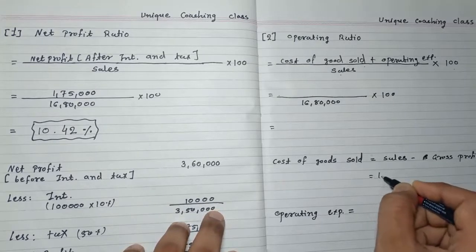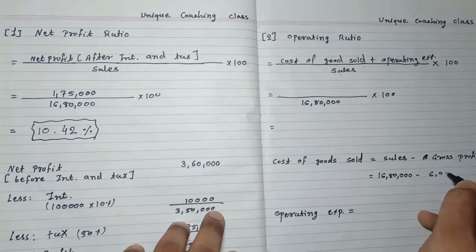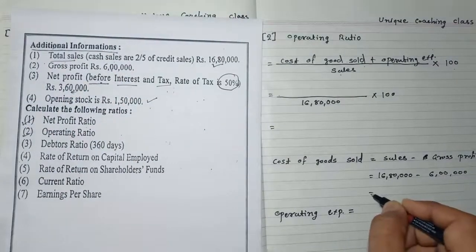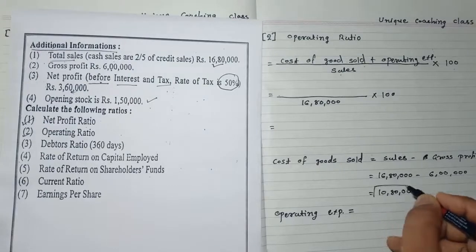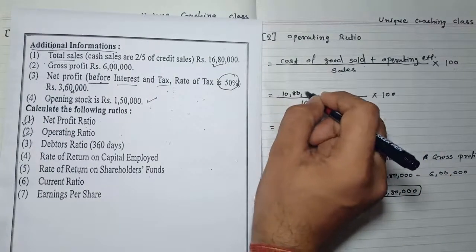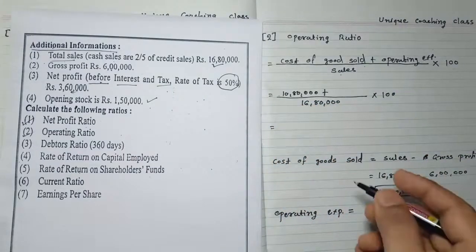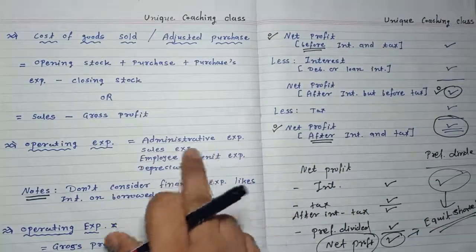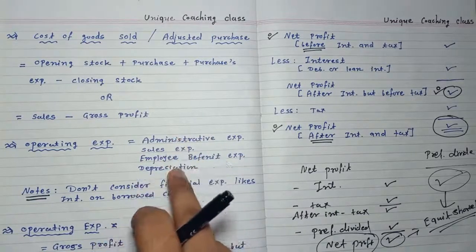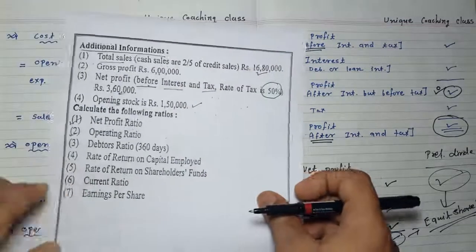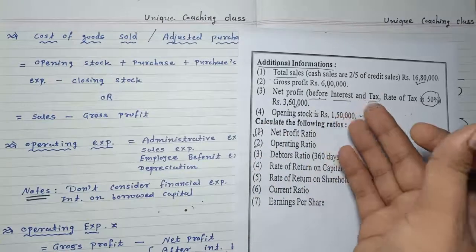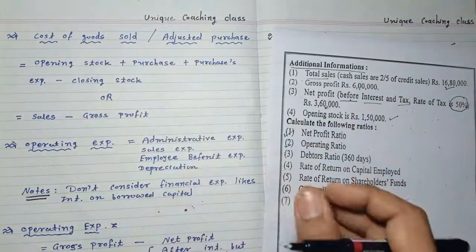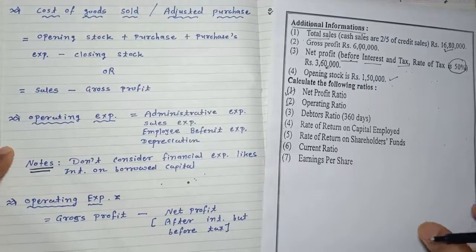Sales 16,18,000 minus gross profit 6,00,000 gives cost of goods sold = 10,80,000. Now for operating expenses: operating expenses include administrative expenses, sales expenses, employee benefit expenses, and depreciation. Let's check the sum — there are no such expenses listed in the additional information or balance sheet, so we cannot find them directly.